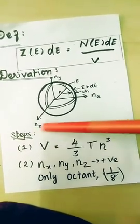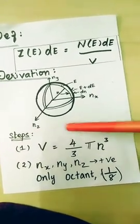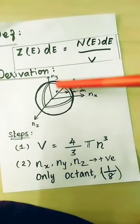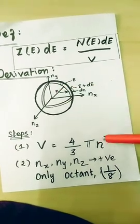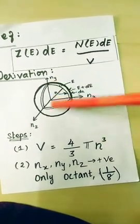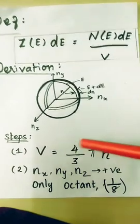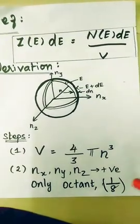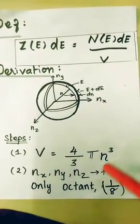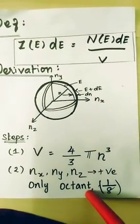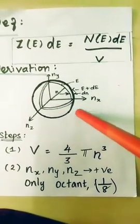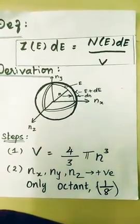Volume of the sphere is 4/3 π N³. Inner radius: Nx, Ny, Nz. Since these are positive, we take the octant of the sphere — 1/8 portion.